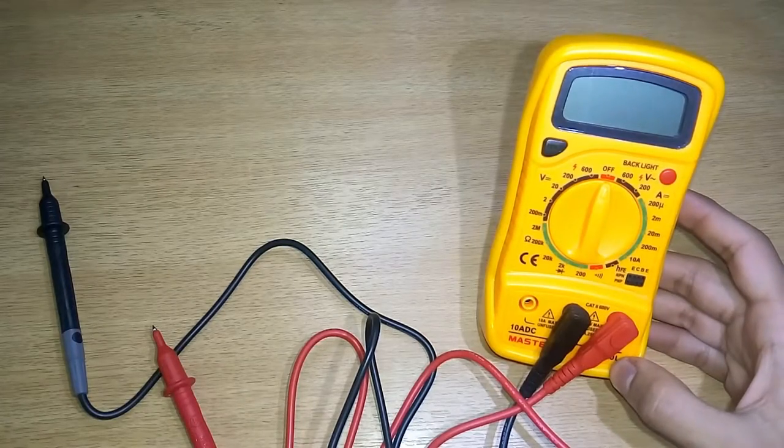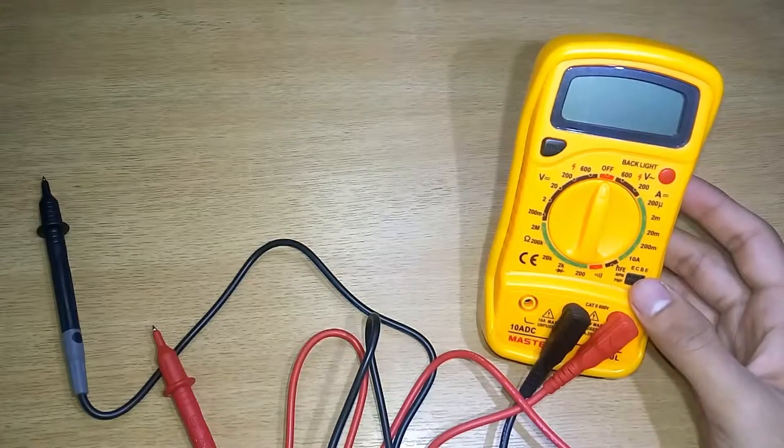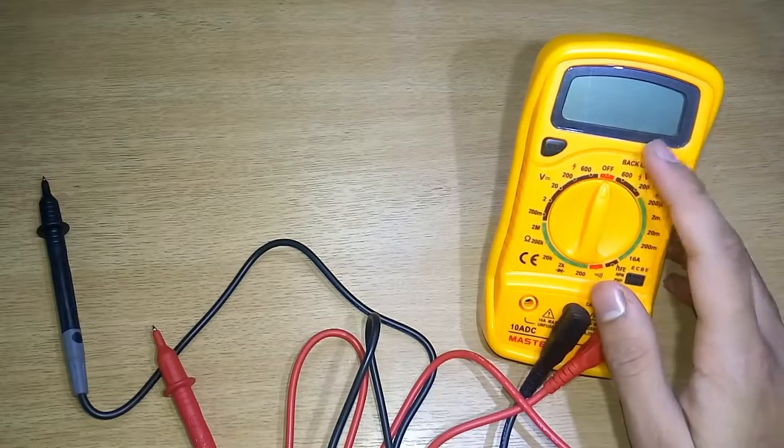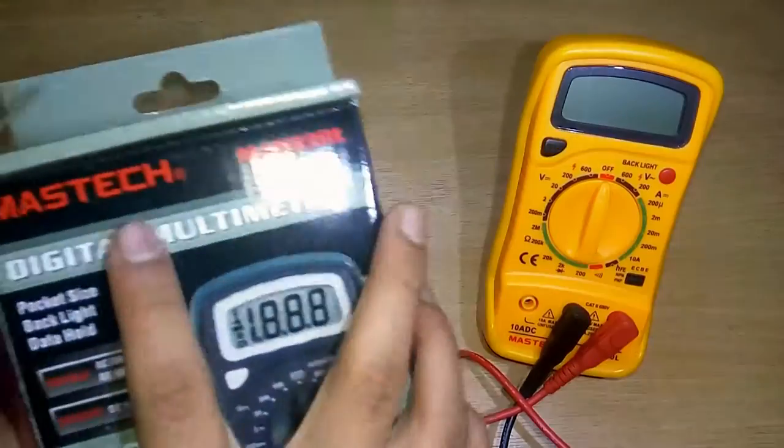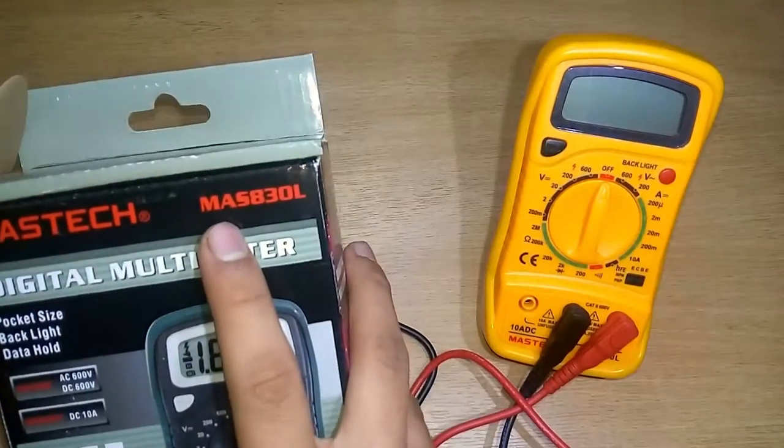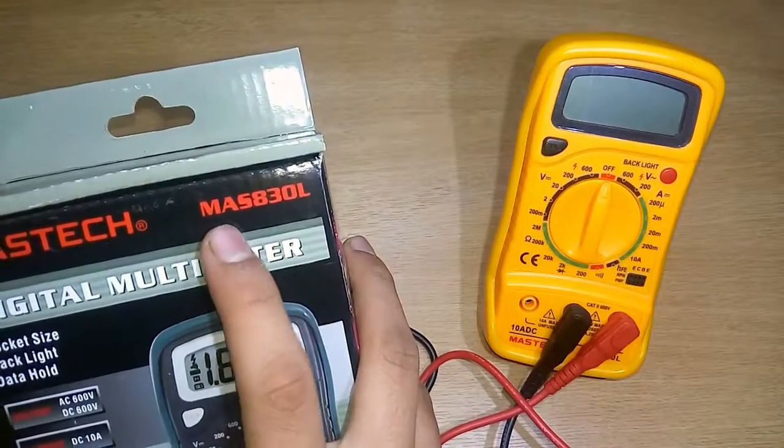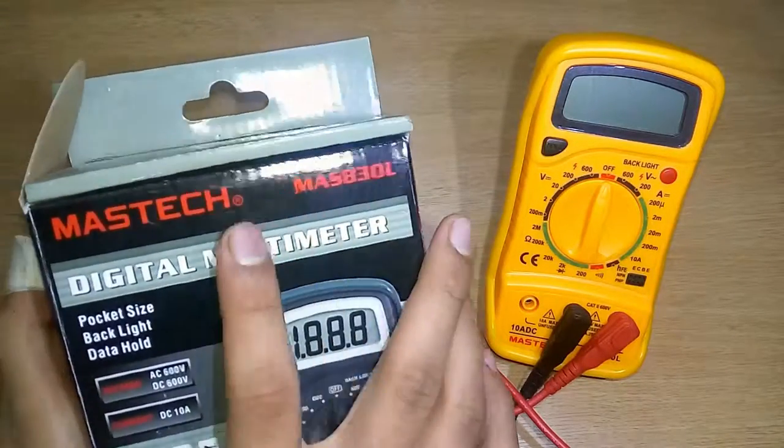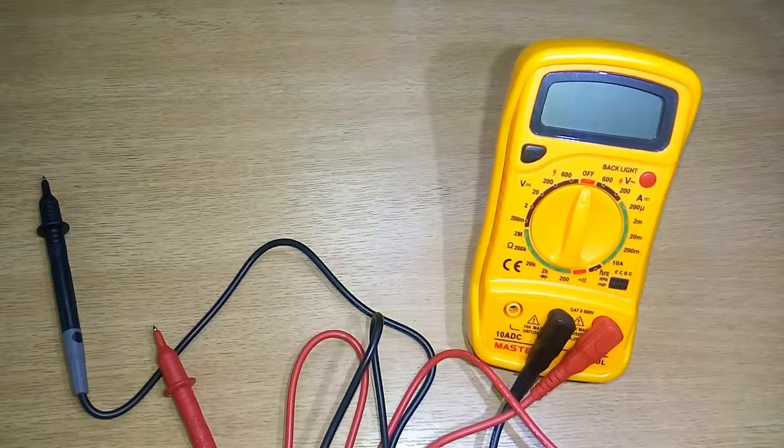It's available on eBay for around six to seven hundred bucks. There are many fake copies of this multimeter which have some different company right here, but they have the same number—the MAS830L. They have different companies and a price 100 or 200 bucks less than its price.